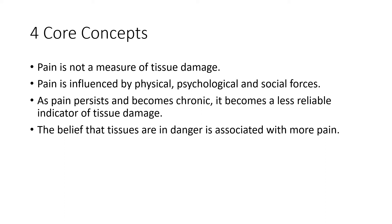Your brain is looking around and collecting data to try to figure out how much pain to give you. The brain looks at your injury, your environment, your thoughts, your feelings, and then it decides how much pain to give. And when I say the brain decides, I'm talking about a process in the brain that is largely outside of our awareness. Number three: as pain persists and becomes chronic, it becomes an even less reliable indicator of the state of the tissues.